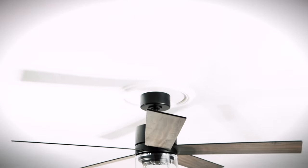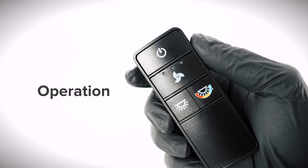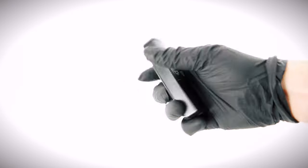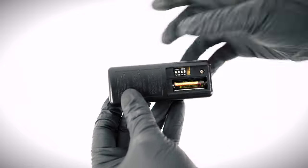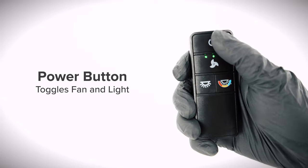The installation is complete and the fan is now ready to operate. On the remote, install the included battery to begin using the fan. Press the power button to toggle the fan and light on or off.